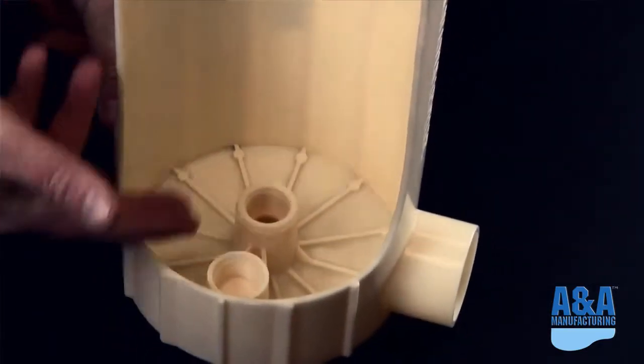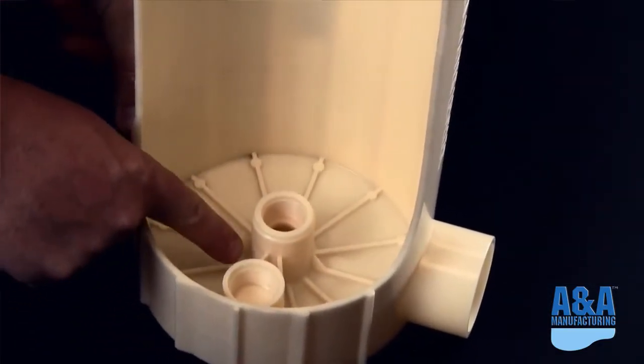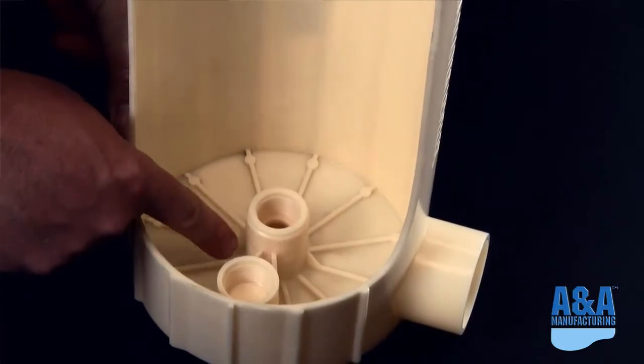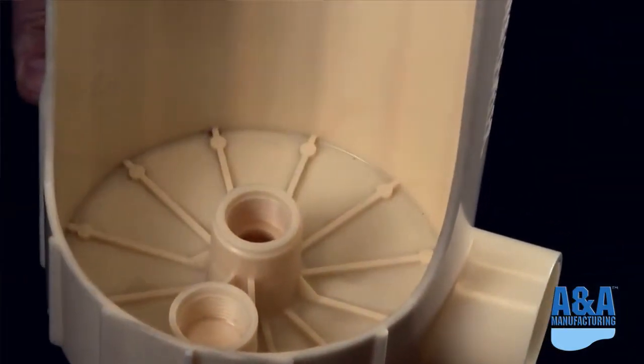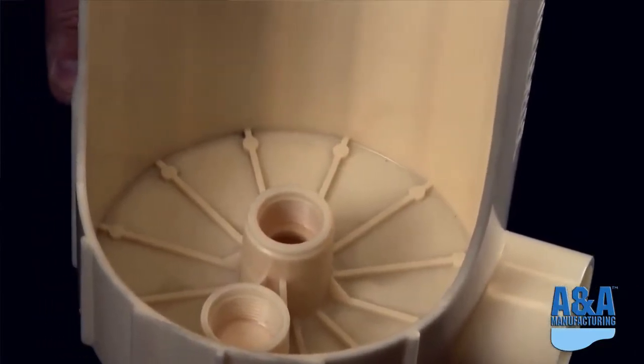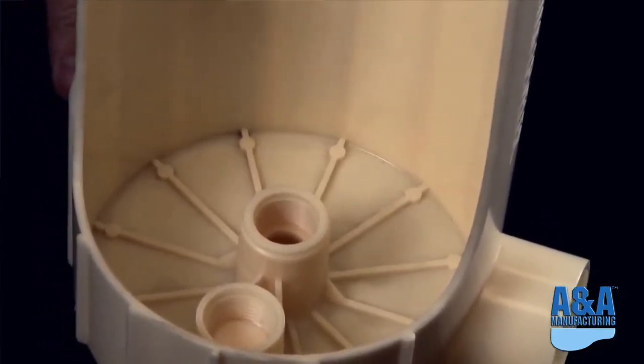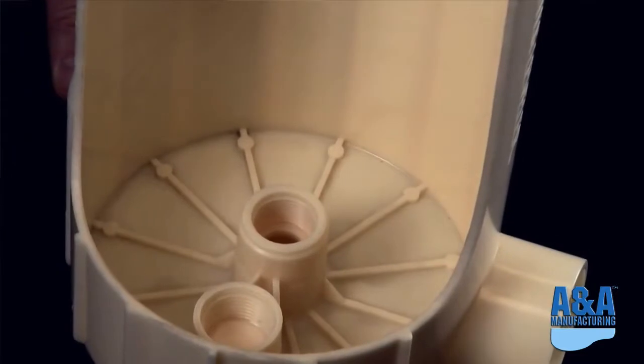So there are several ways that you could plumb this in. Directly below here, you could have a Street 90, you could have a Schedule 80 nipple, or you could have a piece of Schedule 40 pipe. So as you guys all know, the inside diameter of each one of those fittings is slightly different.